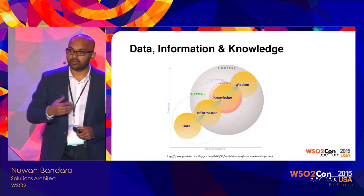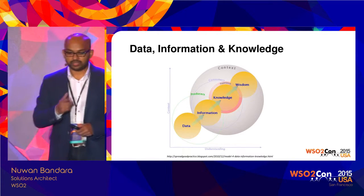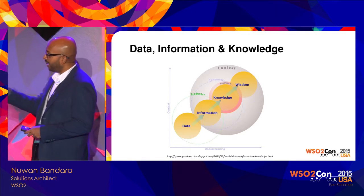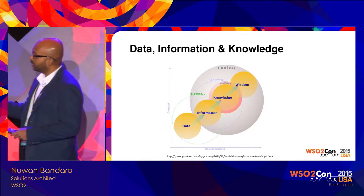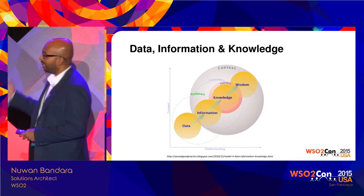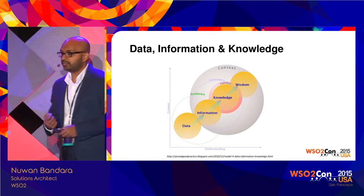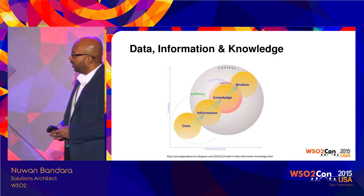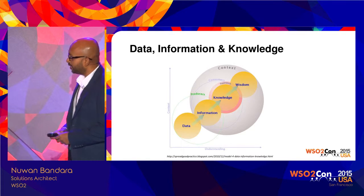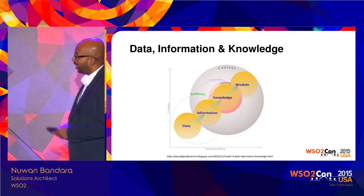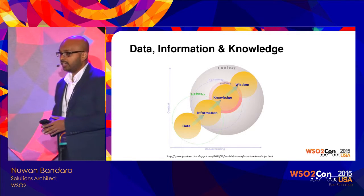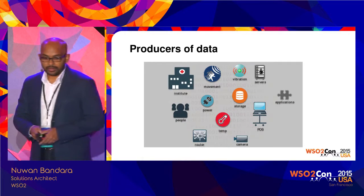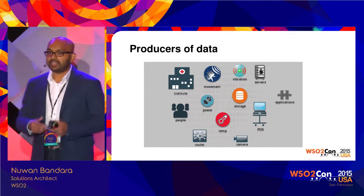In order to look at that aspect we need to understand what is data, what is information, and what is knowledge. This diagram I really like — it shows you how understanding increases, how context increases with the types of data or types of information available in your system, and how the understanding of the system increases with what you have.